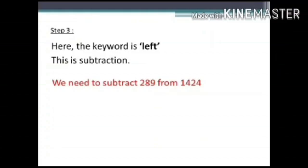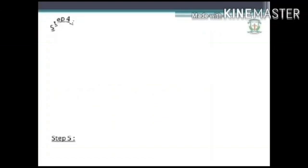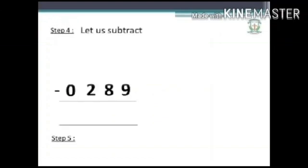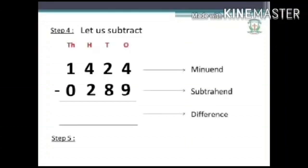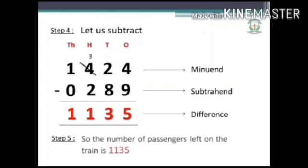Step 4: Let us subtract. 1424 is called the minuend, 289 is called the subtrahend, and the difference is 1135. So the number of passengers left in the train is 1135.